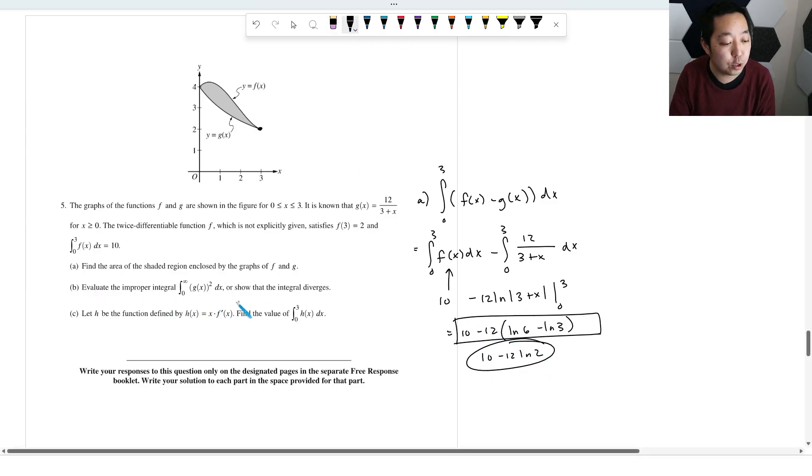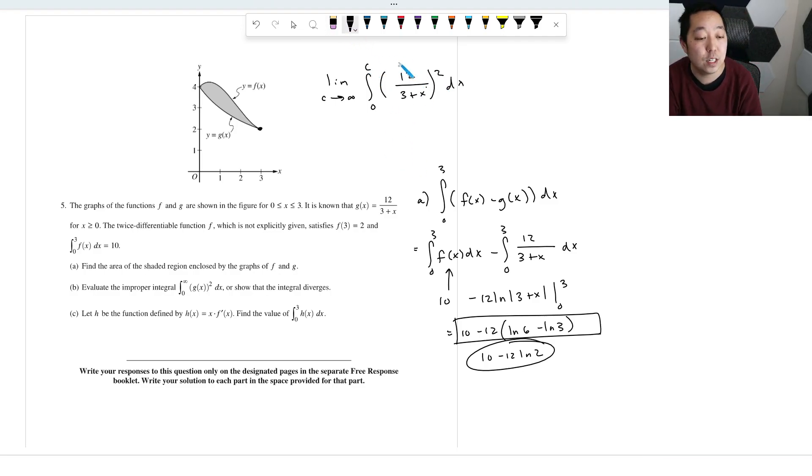Evaluate the improper integral or show that the integral diverges. So notation, improper integral notation, super key. They're probably going to dock you for points. You have to write this as C goes to infinity from zero to infinity of this thing squared 12 over three plus X quantity squared DX. So you want to say C goes to infinity there.